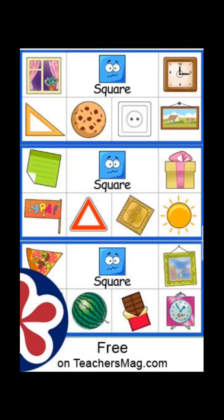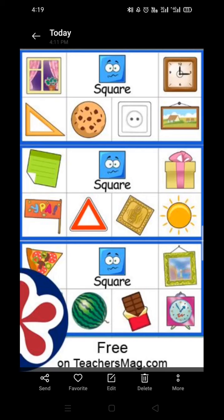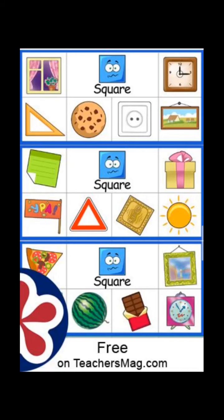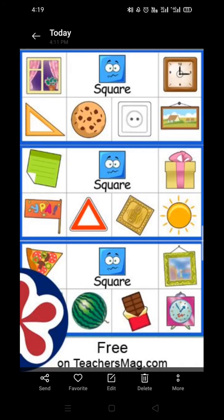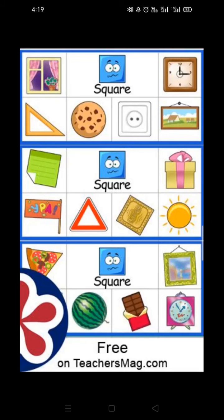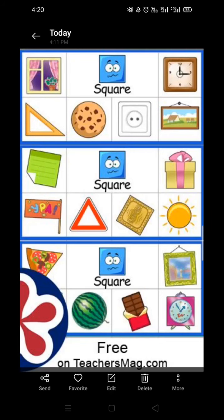So these are the objects related to the shape square. We will see the square shape objects: window, button, clock, letter, square.